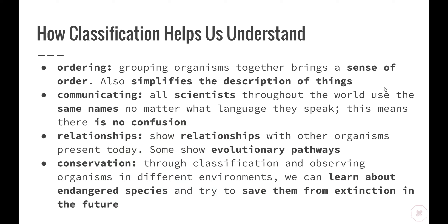How has classification helped us to understand present and past life on Earth? By grouping organisms together, it brings about a sense of order and simplifies the description of things. Through communication, all scientists throughout the world use the same names no matter what language they speak, meaning there's no confusion when classifying an organism, whether still living or extinct. By sharing relationships with other organisms present today, we are also able to show evolutionary pathways and how we get from one group of organisms to the next. Lastly, through classification and observing organisms in different ecosystems, we can learn about endangered species and try to save them from extinction in the future.